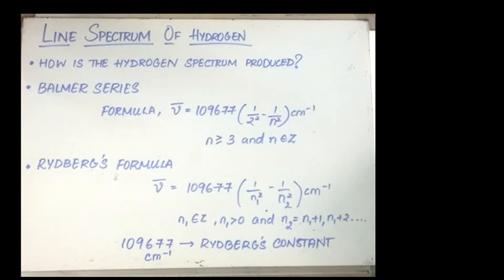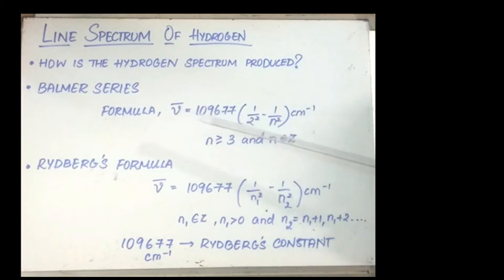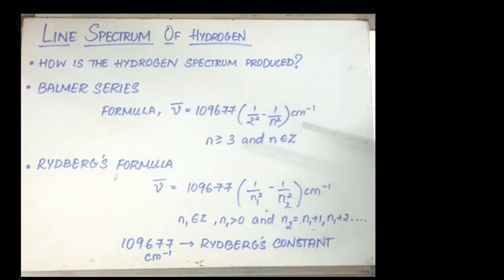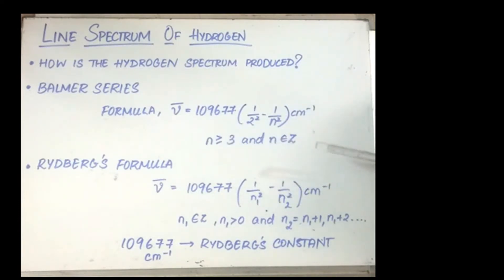Balmer in 1885, on the basis of experimental observations, said that if spectral lines were expressed in terms of wave numbers, then the visible lines would be represented by the formula: nu-bar (wave number) is equal to 109677 times (1/2² minus 1/n²) centimeter inverse, where n is greater than or equal to 3 and n belongs to the set of integers greater than 0.